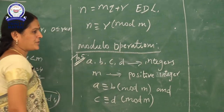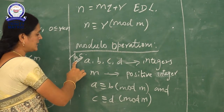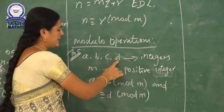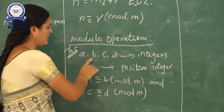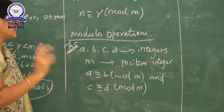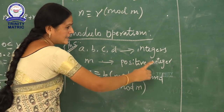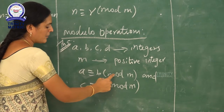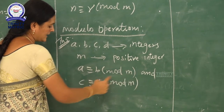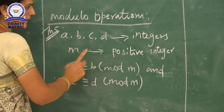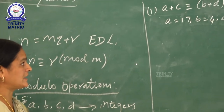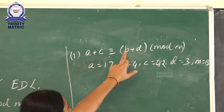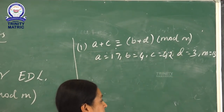Next: modulo operations, Theorem 5. Let A, B, C, D be integers and M be a positive integer, with A congruent B mod M and C congruent D mod M. The first condition is: A plus C congruent B plus D mod M.